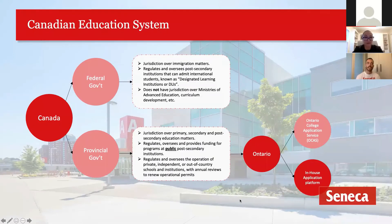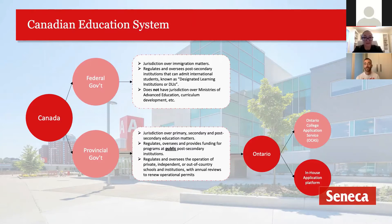First, I wanted to give an overview of what the Canadian education system is like, because it has some key differences with the U.S. system. Canada is divided into 10 provinces and three territories, and we have two levels of government that play a role in post-secondary education. Our federal government has jurisdiction over everything related to immigration.